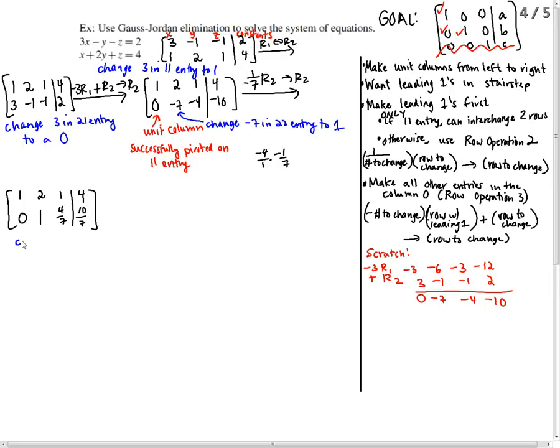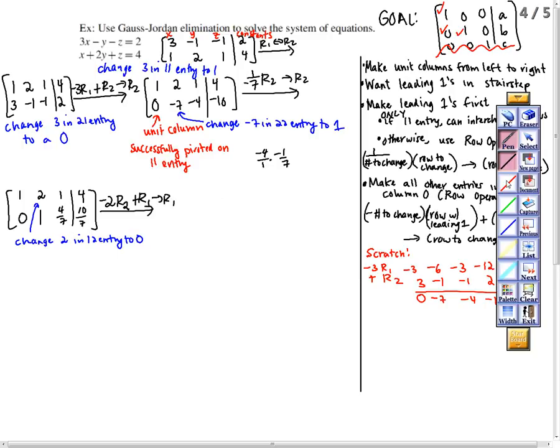Now I want to change the 2 in the 1,2 entry to a 0. Use this row operation here. The negative of the number to change, negative 2, times the row with the leading 1. That's row 2. I'm going to add that to the row I'm trying to change. I'm trying to change row 1. Put it back in row 1. Here's my scratch.